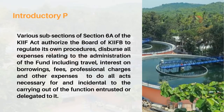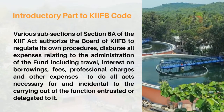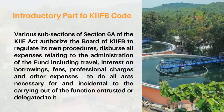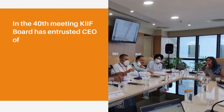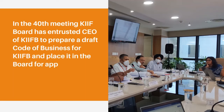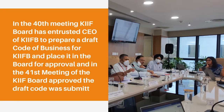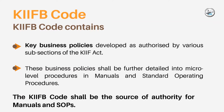Our next topic is KIF-B Code. Various subsections of section 6A of the KIF Act authorizes the board of KIF-B to regulate its own procedures, disburse all expenses related to the administration of the fund, including travel, interest on borrowings, fees, professional charges, and other expenses. In the 40th meeting, the board entrusted KIF-B to prepare a draft code of business for KIF-B and place it before the board for approval. The approved KIF-B code contains key business policies that are detailed into micro-level procedures in manuals and standard operating procedures.